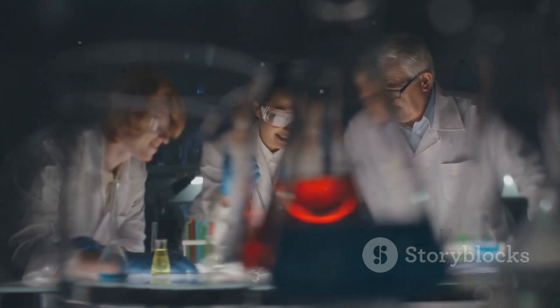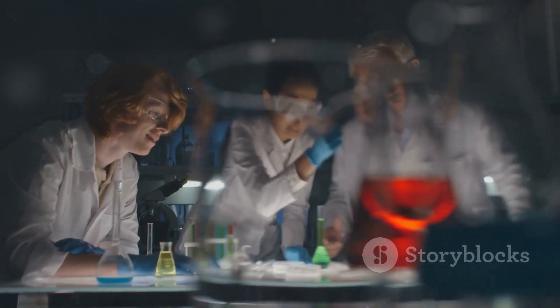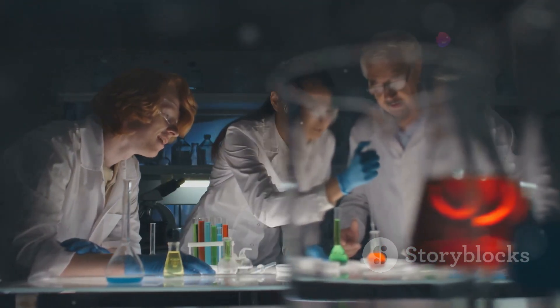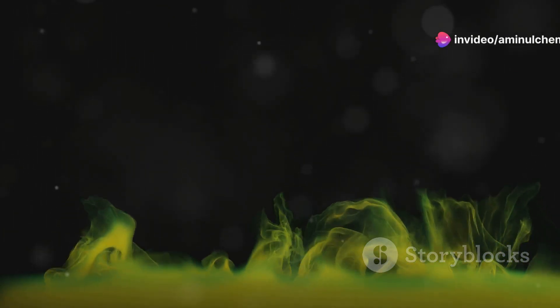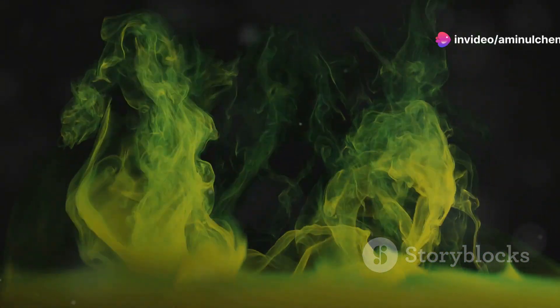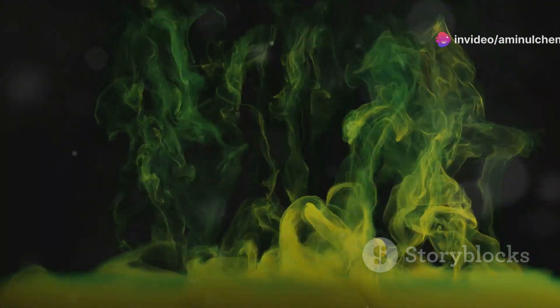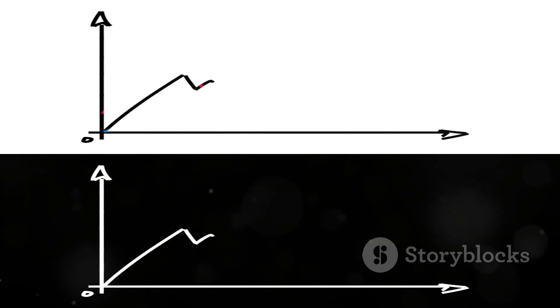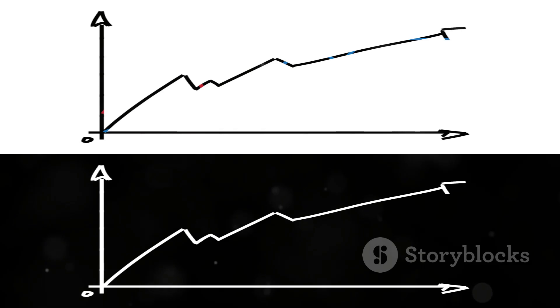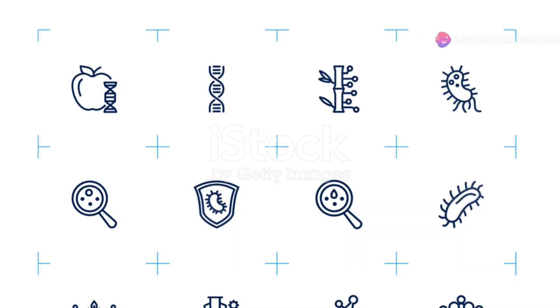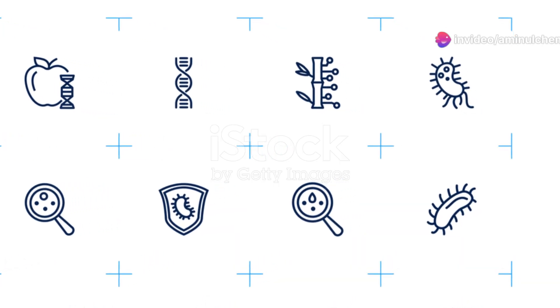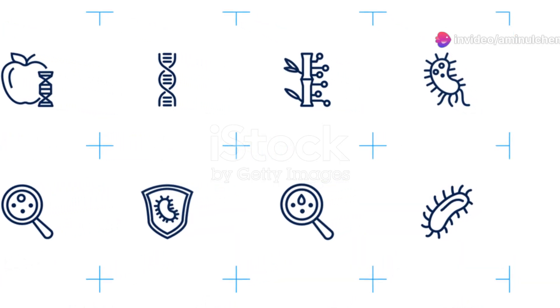Similarly, as the surface of the adsorbent gets crowded, it becomes harder for new molecules to find a place to stick. At the same time, molecules already adsorbed on the surface have a higher chance of breaking free and going back into the surrounding liquid or gas. Eventually the rate of adsorption slows down and the rate of desorption speeds up — and when these two rates become equal, we've reached equilibrium.